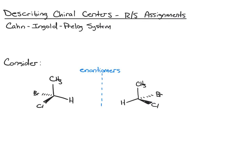In this lesson, we're going to learn a new way to describe chiral centers using what's known as R&S assignments. This is based on the Cahn-Ingold-Prelog system, which is a system essentially developed to prioritize groups. We're going to use this for chiral centers, and later on we're also going to use it for assigning double bond configurations.